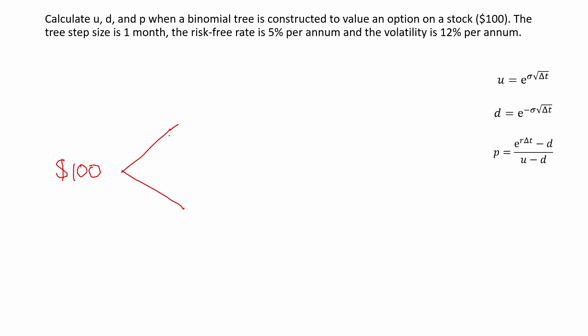Normally, to find out the value of the stock price when it's gone up or down, they give us a percentage. For example, they say in one state the stock price goes up by 20%, in the other state goes down by 10%. Here, on the other hand, they give us the volatility, so we're going to use this to find out u and d. Let's write down what we know.